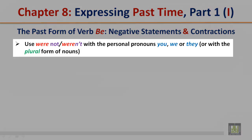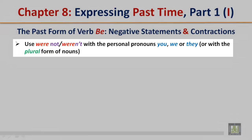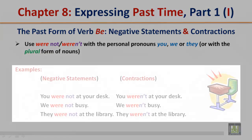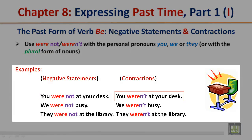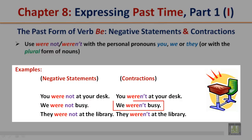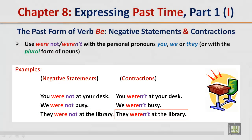Use 'were not' and the contraction 'weren't' with the personal pronouns you, we, or they, or with the plural form of nouns. Examples: You were not at your desk / you weren't at your desk. We were not busy / we weren't busy. They were not at the library / they weren't at the library.